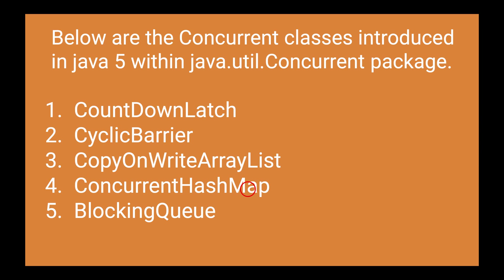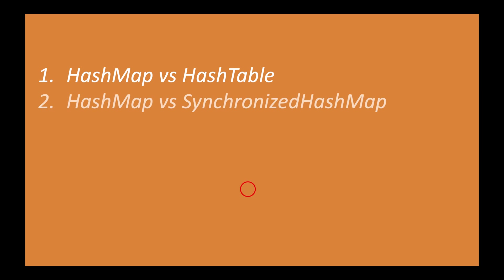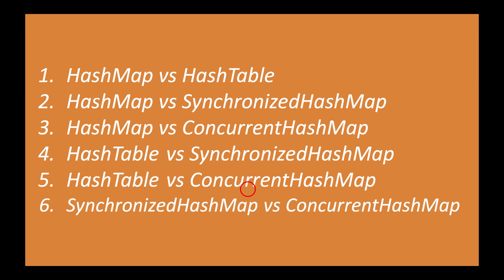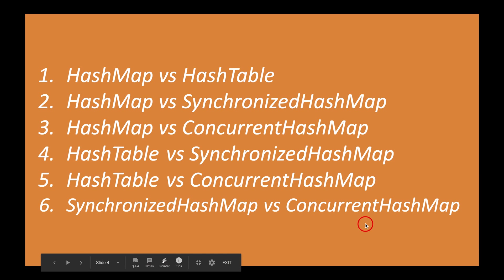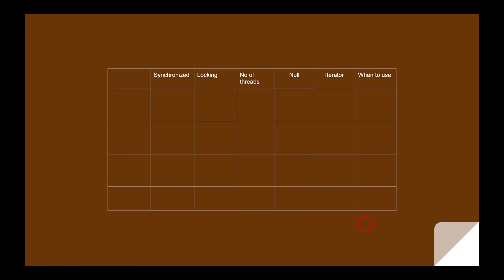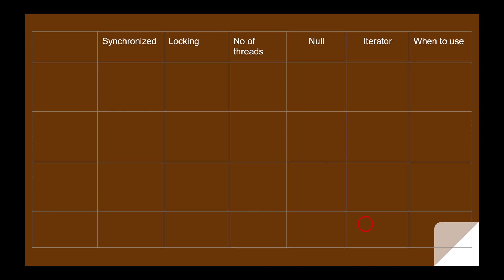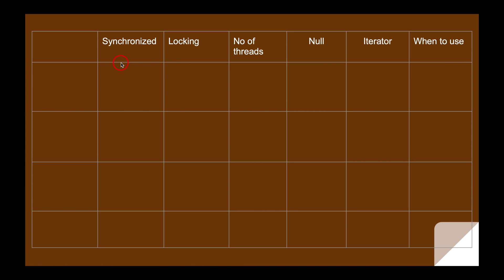I'm going to cover all the combinations — we have six combinations here. The interviewer may ask the differences between HashMap vs HashTable, HashTable vs synchronized HashMap, or synchronized HashMap vs ConcurrentHashMap. When attending an interview, you should remember these six parameters: whether it's synchronized, how many threads can perform operations, whether it allows null keys and null values, what kind of iterator it returns, and whether to use it in a single-threaded or multi-threaded environment.